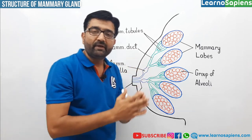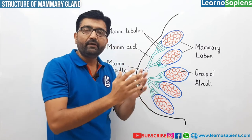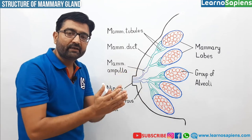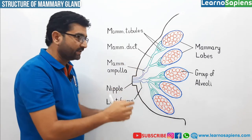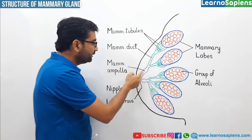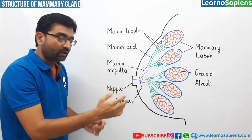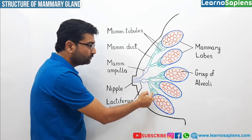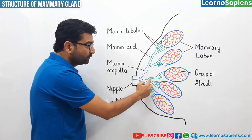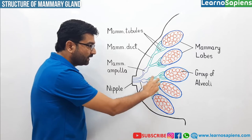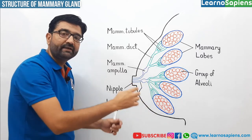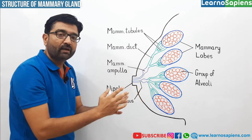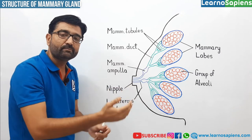Now these memory ducts, jo alag alag memory lobes se hoti hai — jaysse ban lijiye yee dho memory lobe se hai — toh in ki jo memory duct hai, yee again fuse kar jayegi. Dekhi yee dono memory ducts jo hain fuse kar jati hai to form the memory ampulla. Yaha pe aap dekhi yee memory ducts hain, yee memory tubules. And these memory tubules join to form the memory duct, or yee sari memory ducts join to form memory ampulla. Yee jo aagal ko blue color se dikh raha hai — yee hai memory ampulla.